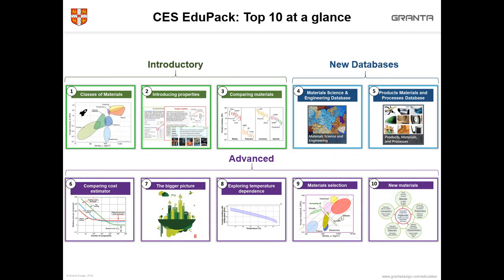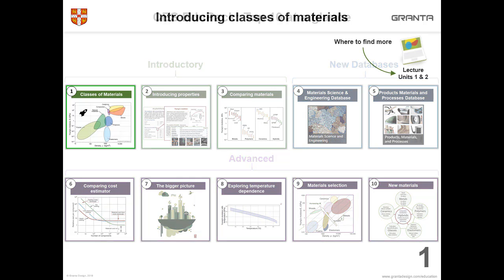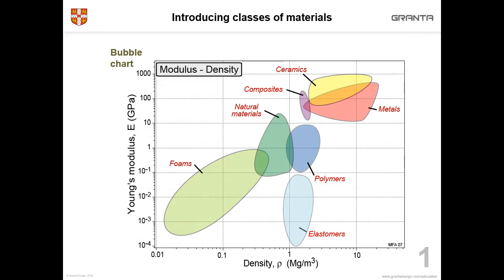Let's start with the introductory area and classes of materials — you can find out more about this in lecture units one and two. You can use charts like these to help students understand the difference between metals and alloys, ceramics, composites, foams, elastomers and polymers, etc.